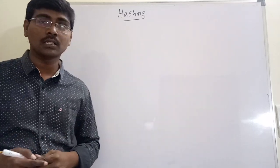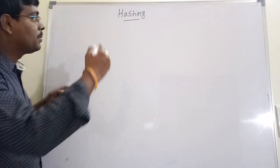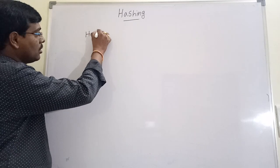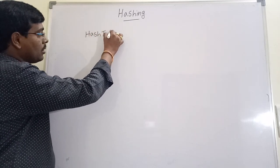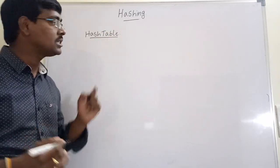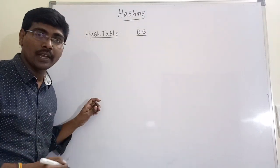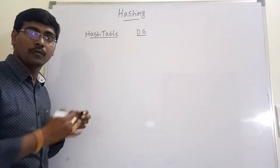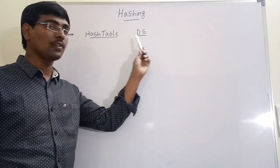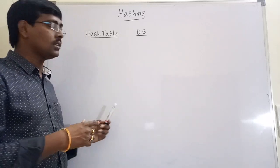In this session we will discuss hashing concepts in data structures. Before going to hashing, we will discuss the basic terms that are used in hashing. The first and most important term is hash table. A hash table is a data structure used for storing of information, that is storing of records.